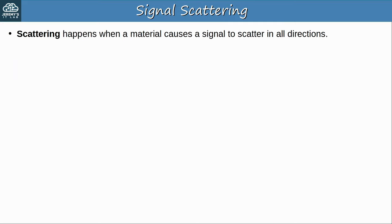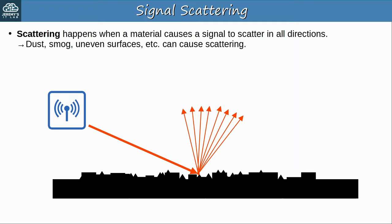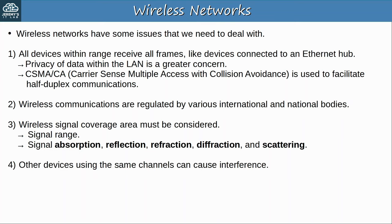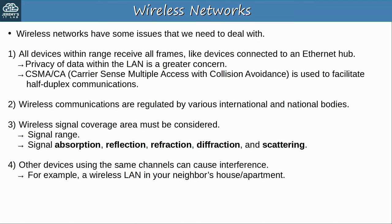Scattering happens when a material causes a signal to scatter in all directions. Dust, smog, uneven surfaces, etc. can cause scattering. When a signal from a wireless access point strikes an uneven surface, the signal is scattered in all directions. All of those — absorption, reflection, refraction, diffraction, and scattering — can affect the quality of a wireless signal. When planning the positioning of wireless access points for a network, you have to take all of these into account. One more issue is interference: other devices using the same channels can cause interference, for example a wireless LAN in your neighbor's house or apartment.